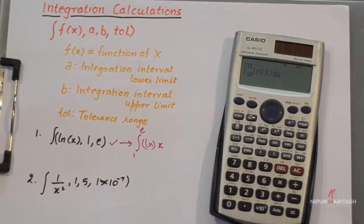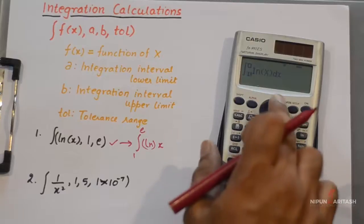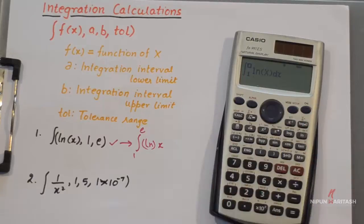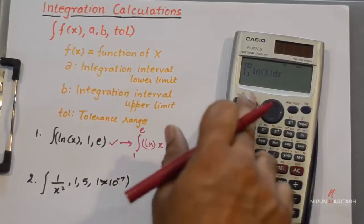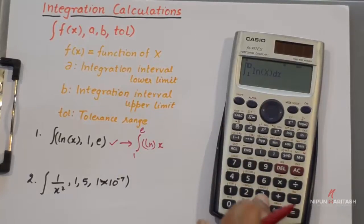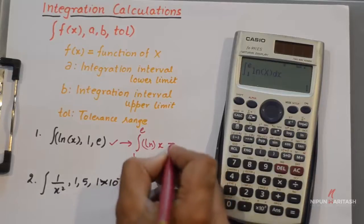Which in our case is 1, then press the up arrow key. It will prompt you to enter the upper limit, and in our case the upper limit is e. So you can input that by pressing alpha and then this key, then equals, and the answer is 1.